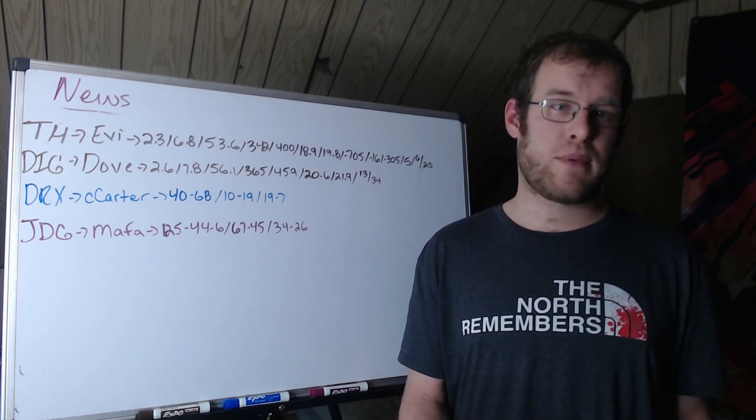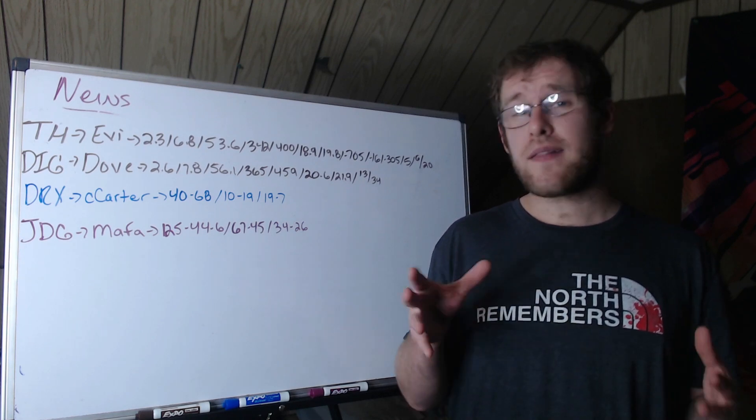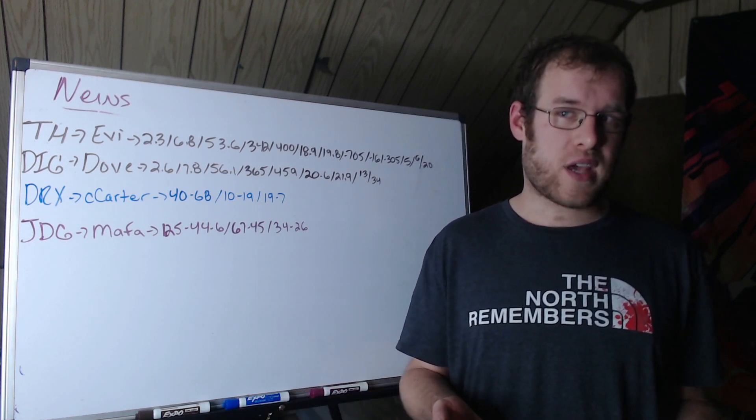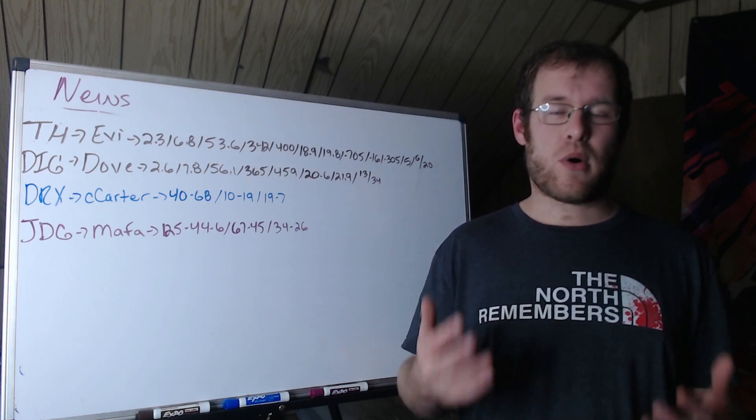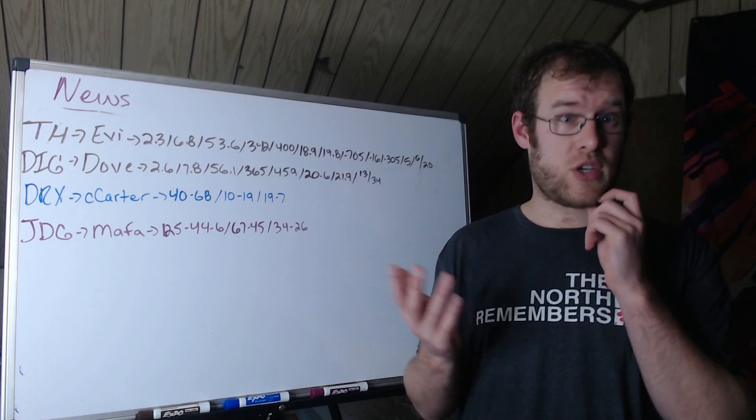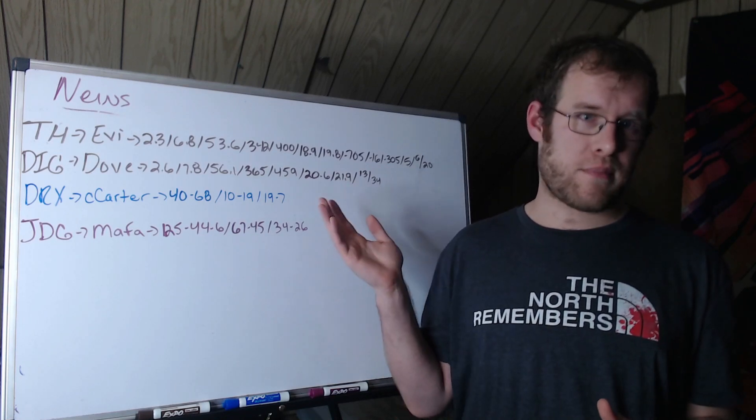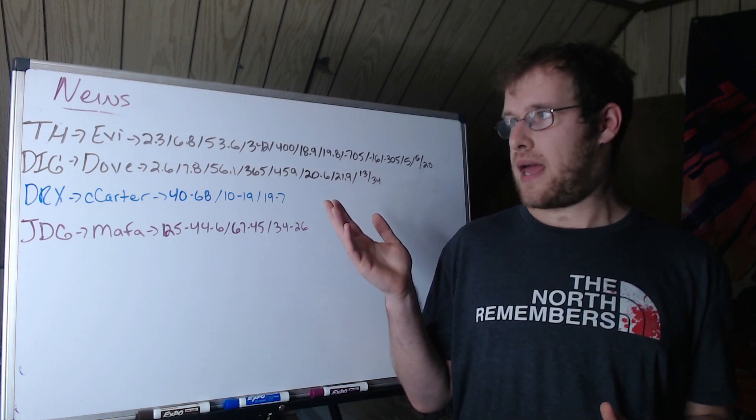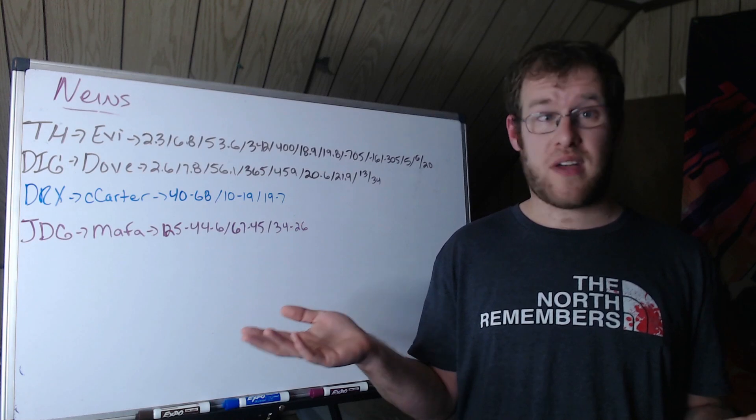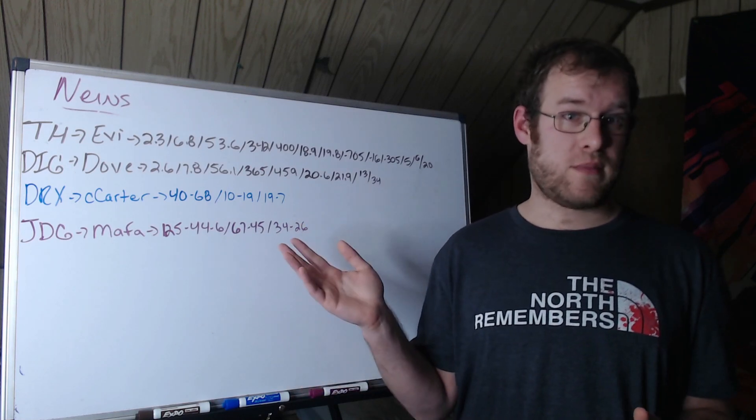But if you can't play 13 champions and get it to where you're 8.5 CS per minute, or 70% kill participation, or you're dealing 25% of your team's damage up to 26% and you're getting 22% of gold - like you're actually doing things and being relevant - then we have to say to ourselves, you know what, 13 might be too much. Let's just play half of that, seven, and play them well.